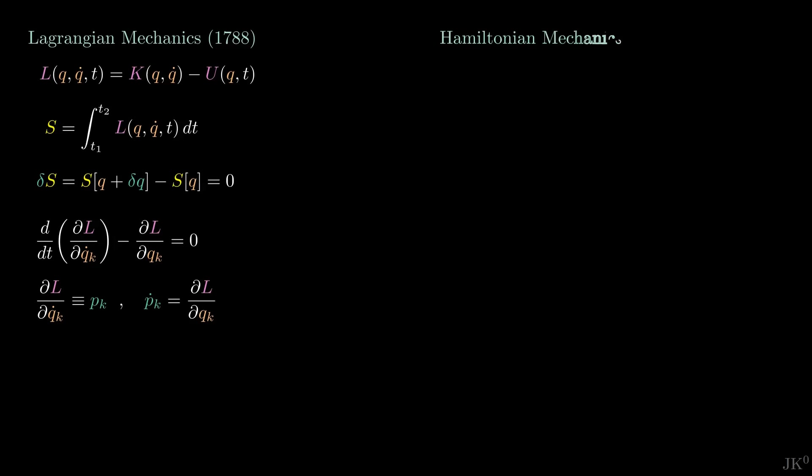Textbooks usually tell the story of how Hamilton replaced the Lagrangian, dependent on the coordinates q and its speeds q-dot, by a new object, now called the Hamiltonian, that instead depends on q and the canonical momentum p. The way to construct this Hamiltonian is via a method called the Legendre transform. From here, Hamilton derived equations for the time evolution of his two canonical variables, and found that in general, the Hamiltonian can be written in this form.